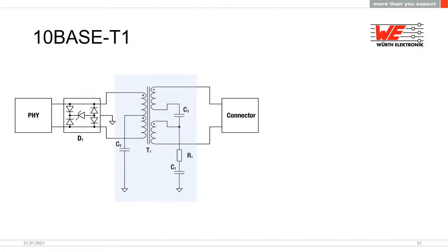The TVS diode is placed between the transformer and the PHY chip rather than close to the connector. If you place the TVS near the connector and perform high-pot testing from the cable to ground, you cannot switch off the TVS diode and it may be damaged. Placing it between the transformer and PHY chip avoids this problem.